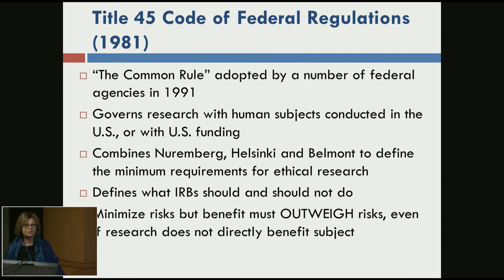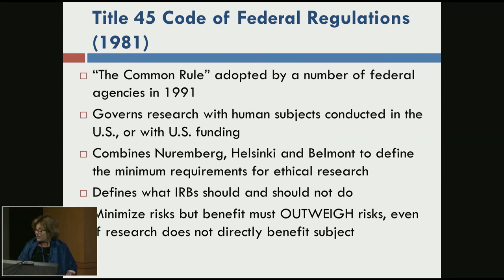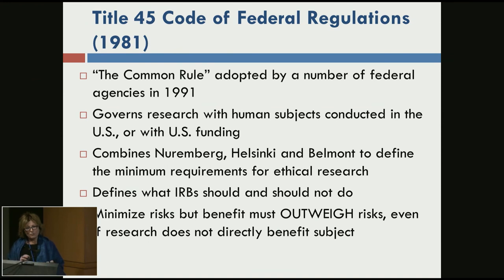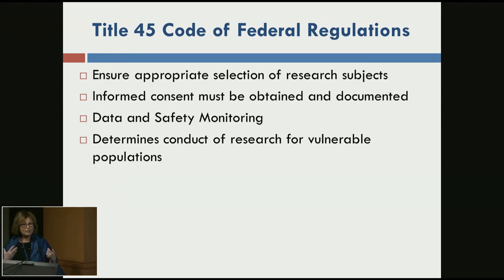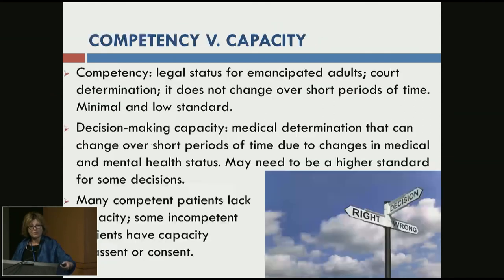Title 45, the Code of Federal Regulations, was introduced in 1981, making all of these ethical guidelines federal law — we must by law now follow codified ethical guidelines. The Common Rule basically combines Nuremberg, Helsinki, and Belmont and defines the minimum requirements for ethical research, including what IRBs should and should not do. The benefit must outweigh the risks even if research does not directly benefit the subject, and it ensures proper selection of research subjects, data and safety monitoring, et cetera.